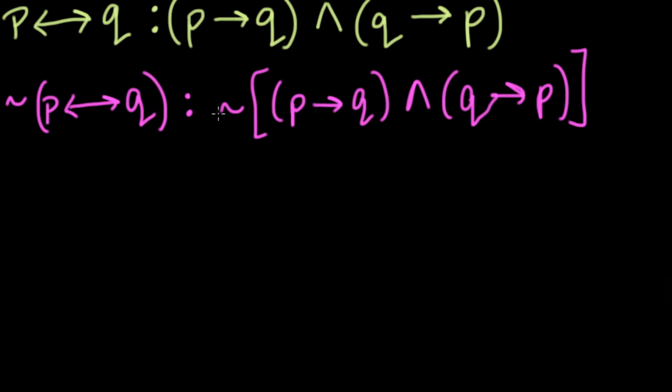Because in a way, we're going to be distributing this not sign. So what we're doing is distributing it, right? So the first term, in a sense, is this piece right here. So we distribute it. So we get not P then Q. And you want to leave it like this. And then we distribute it to the and sign, and that becomes an or sign. And then we distribute it to this last term right here, Q then P.